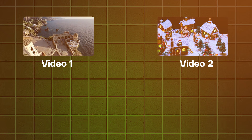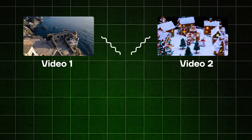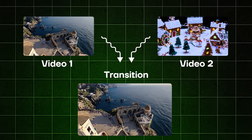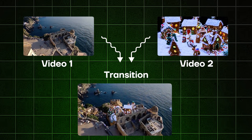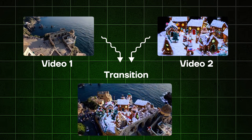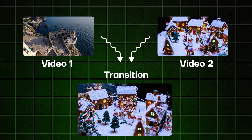Sora can gradually interpolate between two input videos of any subject, and the result video will be a seamless transition between the inputs.